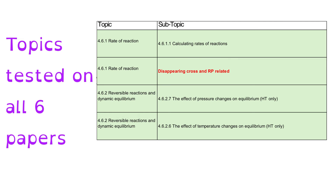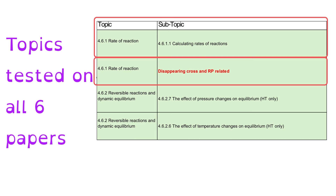Four out of 62 subtopics have come up on every single paper. These are: calculating rates of reaction; the disappearing cross and associated rates of reaction practicals; and two dynamic equilibrium subtopics relating to pressure and temperature and their impact on the position of equilibrium.